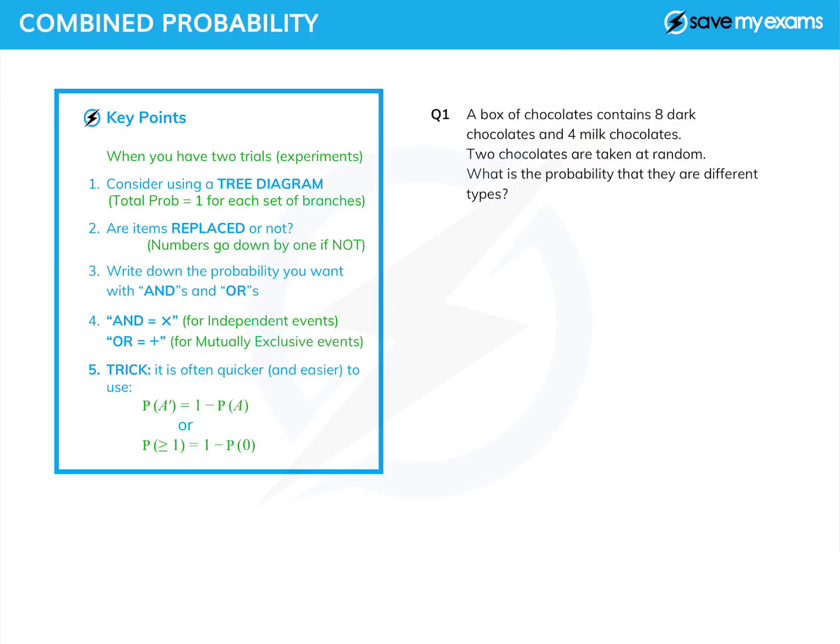So in this tutorial, we're going to look at combined probabilities, which is what you have to deal with when you have more than one thing happening. So two trials, if you like. Remember, a trial is an experiment, a probability experiment.